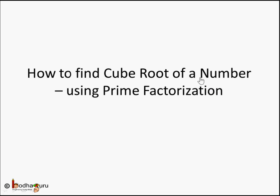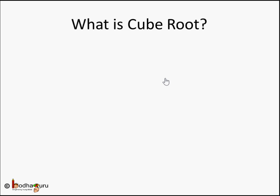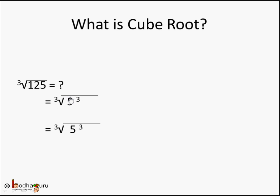Hello children. In this video we are going to learn how to find a cube root of a number using prime factorization. Let's revise what a cube root is. For example, the cube root of 125: we can represent 125 as 5 cubed, because it's 5 into 5 into 5. So the cube root of 5 cubed — we cancel the cube and cube root — and we are left with 5. So 5 cubed is 125, or vice versa, the cube root of 125 is 5.